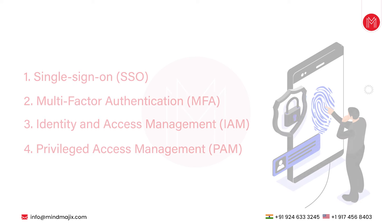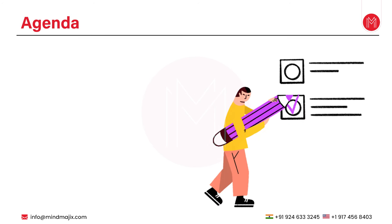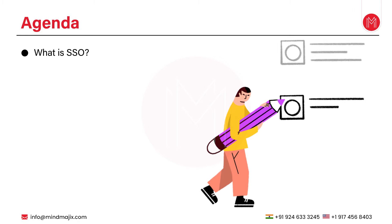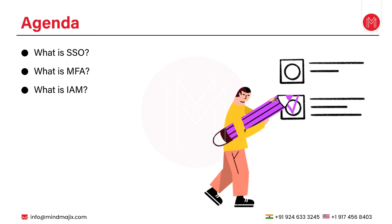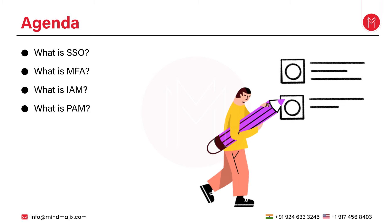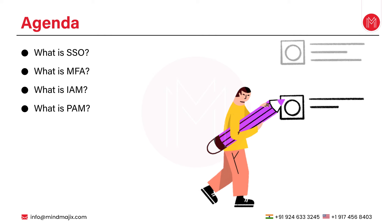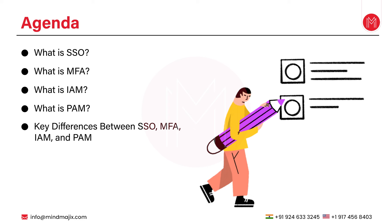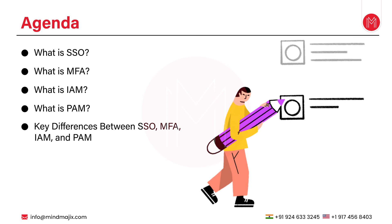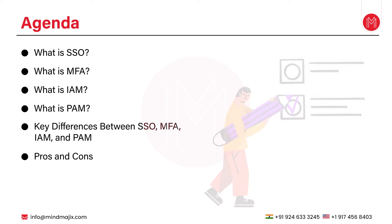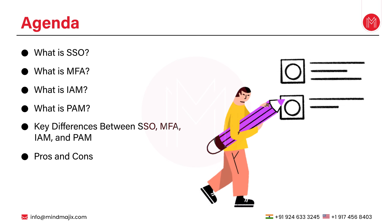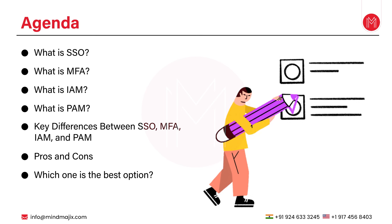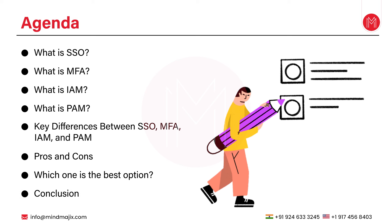Let's quickly have a look at the agenda for today's session. Firstly, we will see what exactly is SSO, then what is MFA, then what is IAM, and then what is PAM. Moving on, we will highlight some of the key differences between SSO, MFA, IAM, and PAM. Next, we will also see a few of the pros and cons of each of them, then which one is the best option among the four, and finally how to choose the best option.